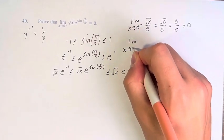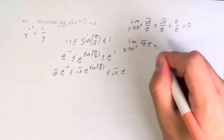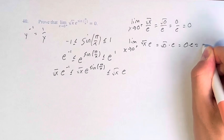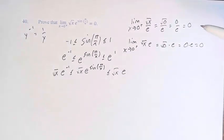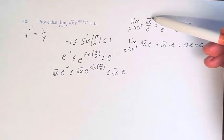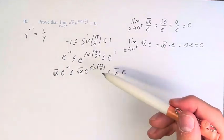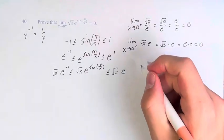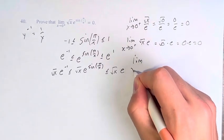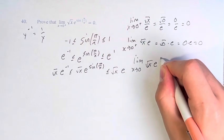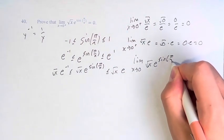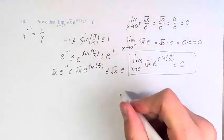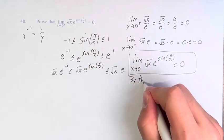And same thing over here: the square root of x times e equals the square root of 0 times e, which equals 0. Therefore, since the limit as x approaches 0 from the right of these two bounding functions is equal to 0, and our function is within them for all values of x, we can say that the limit as x approaches 0 of our function is equal to 0. And this is by the squeeze theorem.